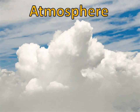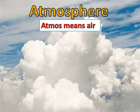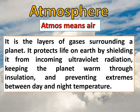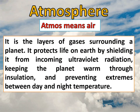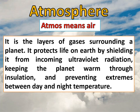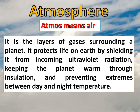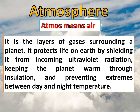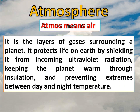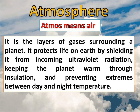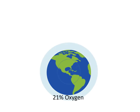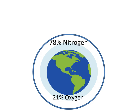Next is the atmosphere. Atmos comes from the Greek word meaning air. It is the layers of gases surrounding a planet. It protects life on Earth by shielding it from incoming ultraviolet radiation, keeping the planet warm through insulation, and preventing extremes between day and night temperatures. We cannot see the air, but it covers the entire planet like a huge blanket. Our Earth's atmosphere is composed of 21% oxygen, 78% nitrogen, and 1% other gases.